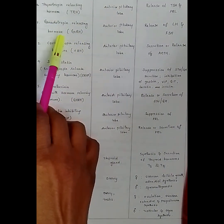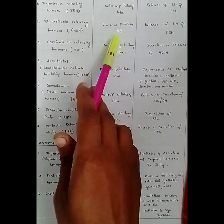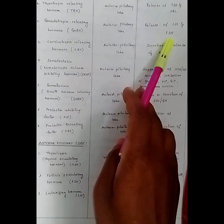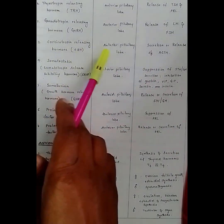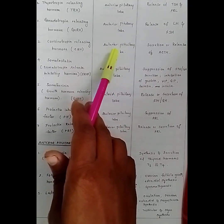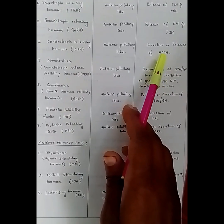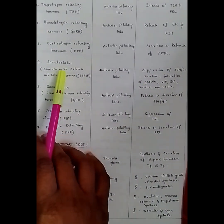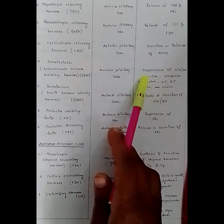Gonadotropin releasing hormone — its site of action is at the anterior pituitary lobe and it releases luteinizing hormone and FSH. Corticotropic releasing hormone is released in the anterior pituitary lobe and is helpful in the release of ACTH.